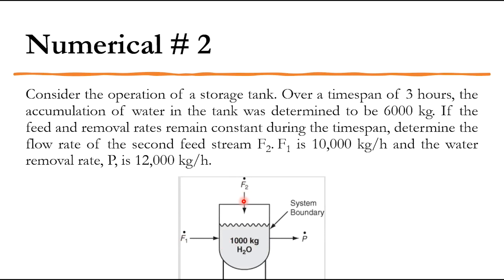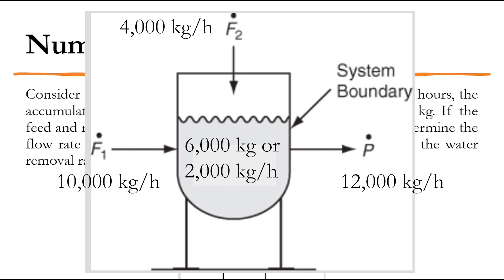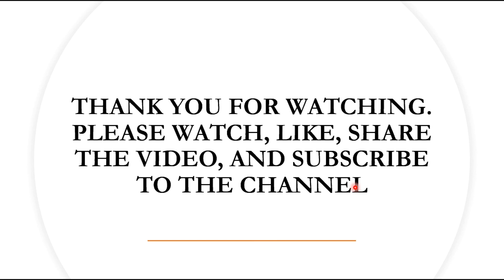So 10,000 + 4,000 = 14,000 kg/hr is entering the system and 12,000 kg/hr is going out. That means 6,000 kg of accumulation occurs over three hours, or equivalently 2,000 kg/hr of accumulation. That is the simple balance. Thank you so much — please watch, like, share, and subscribe to the channel. Click the bell icon for all updates. Till then, goodbye and stay tuned for more videos.